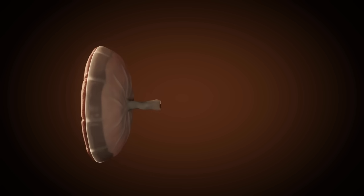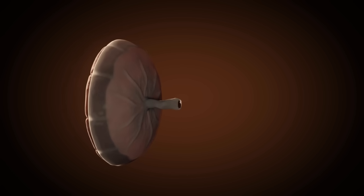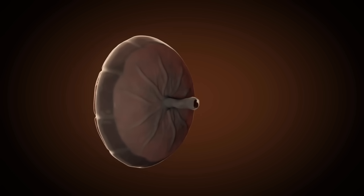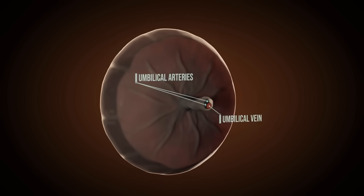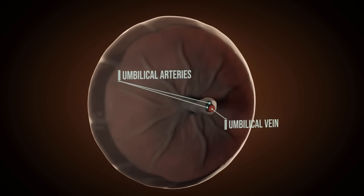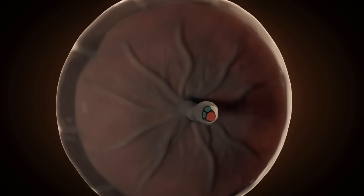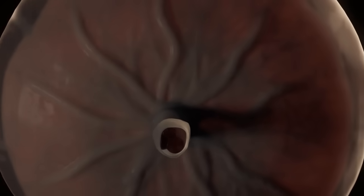At first, the fetus is supplied by the body stalk and yolk sac, but then more and more by the umbilical cord and placenta. Since the fetus possesses both the DNA of the mother and of the father, the blood of the fetus must not mix with the blood of the mother. The placenta is responsible for this.